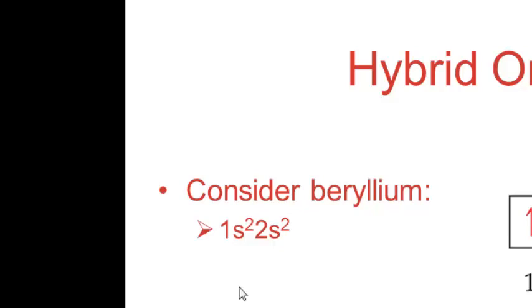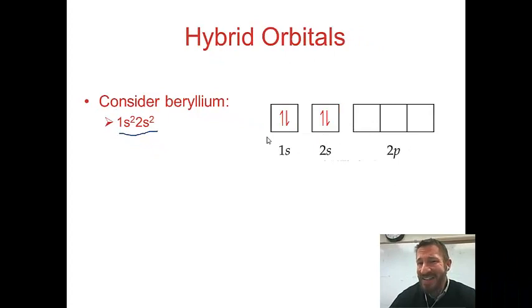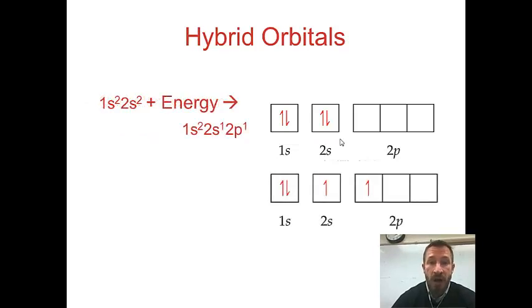Let's consider beryllium. If you had to do electron configuration of beryllium, it'd be 1s2 2s2. Now it doesn't seem like beryllium would bond because both these orbitals are full. There's two electrons in 1s and two electrons in 2s. There's really nowhere for electrons to go, but we know that beryllium actually does form bonds.